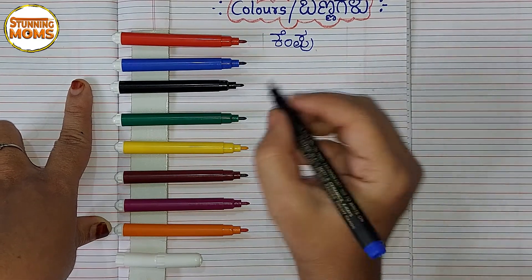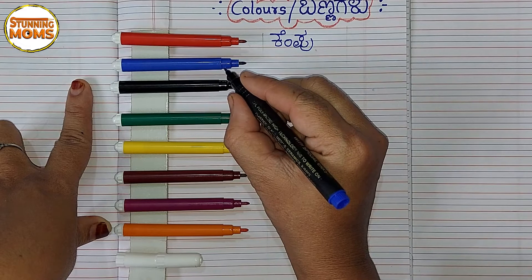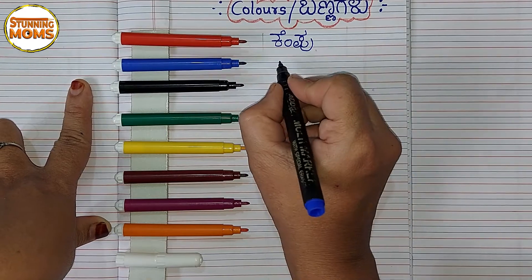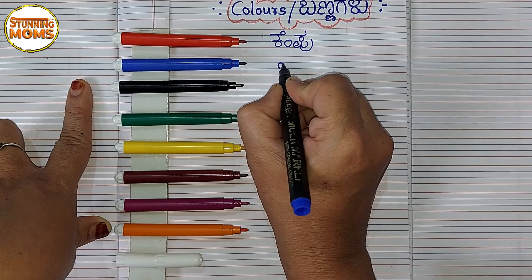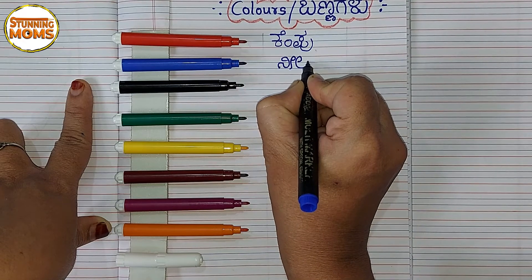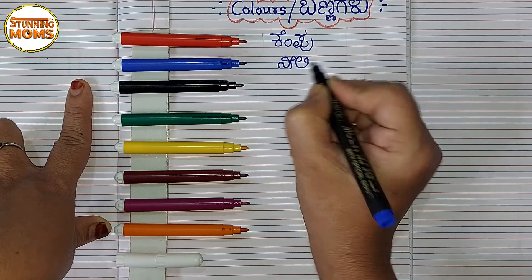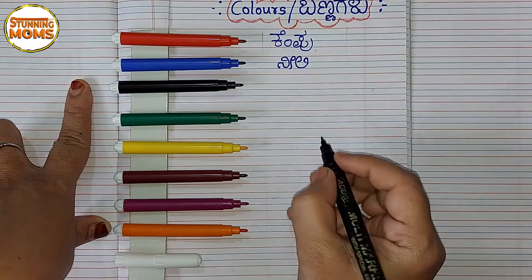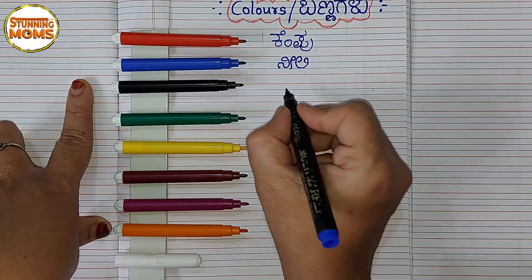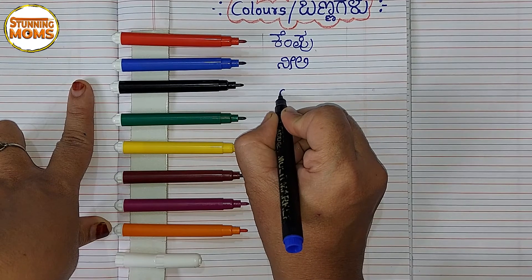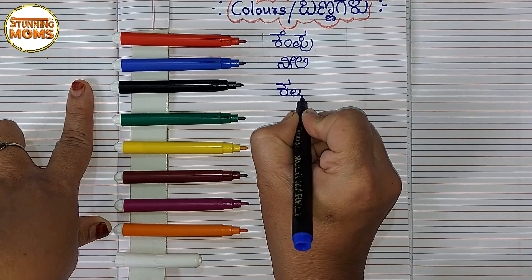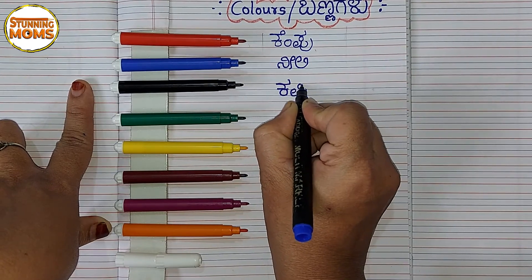Kempu banna. Blue color — neelie, neelie banna. Black color — kappu banna, kappu.